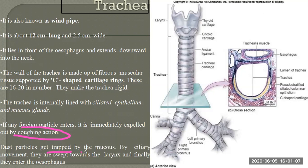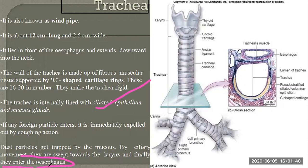Dust particles get trapped by the mucus and by ciliary movement they are swept towards the larynx, and finally enter the oesophagus. These are the functions of the ciliated epithelium — the ciliary movement sweeps particles towards the larynx and ultimately into the oesophagus.